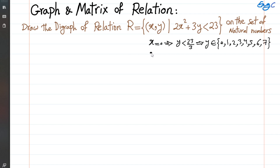If x equals 1, substituting gives 2 plus 3y less than 23, so y is less than 21 over 3, which is less than 7. It would be the same set except now 7 is excluded because it should be strictly less than 7, so we have up to 6 — giving 7 choices.